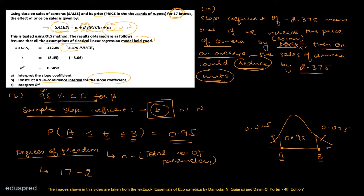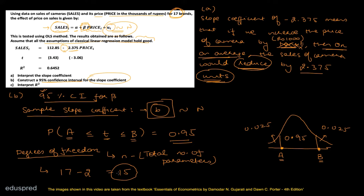A common mistake is writing degrees of freedom as n minus the number of independent variables. That is wrong. Even though there is only one independent variable, there are 2 parameters because there is also an intercept term. The correct degrees of freedom is n minus total number of parameters, which is 15.